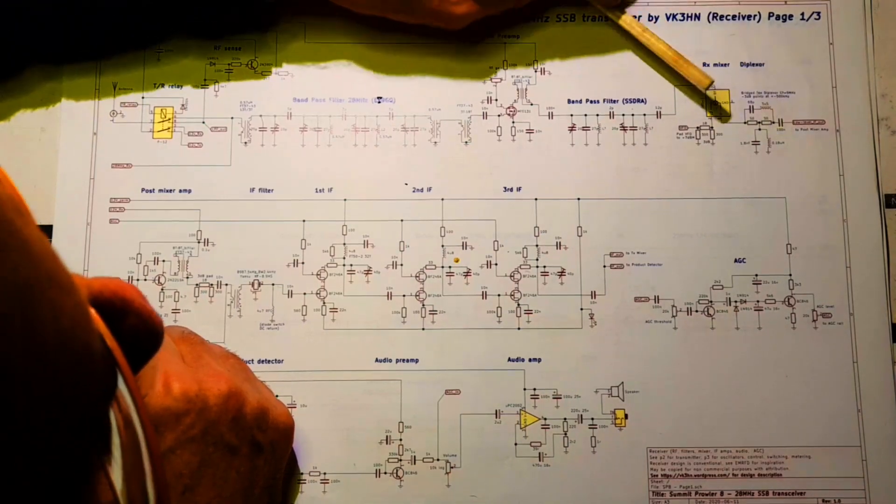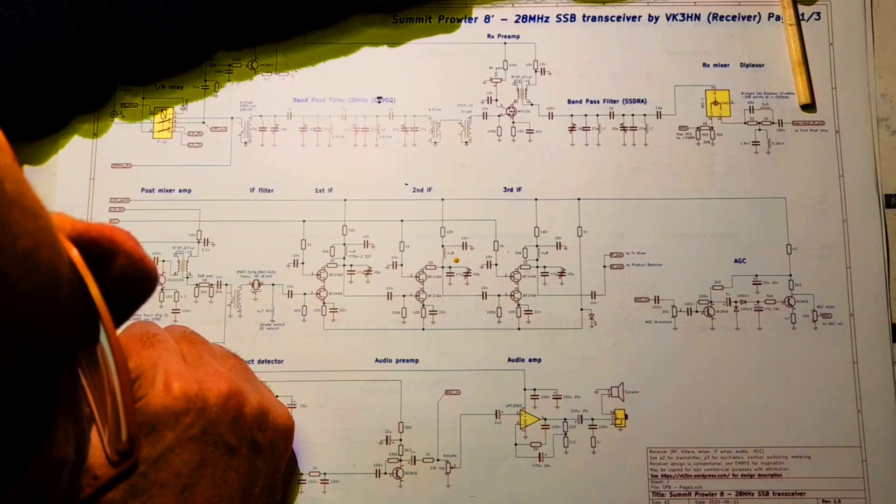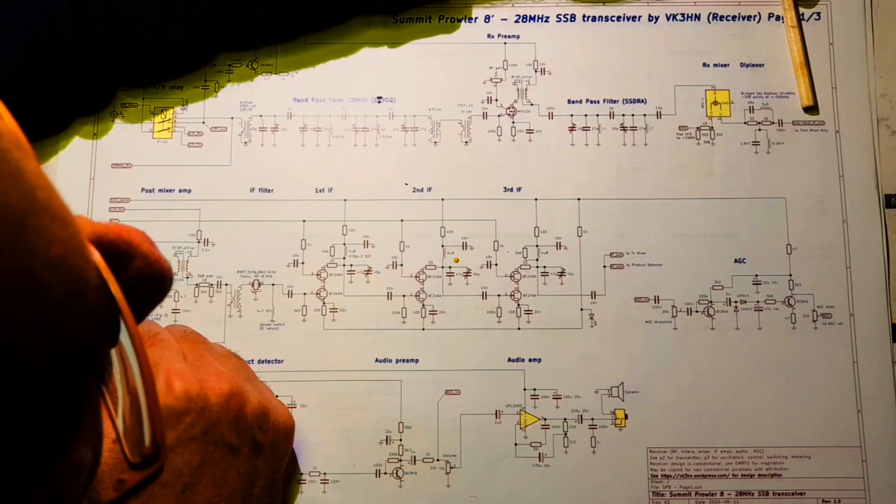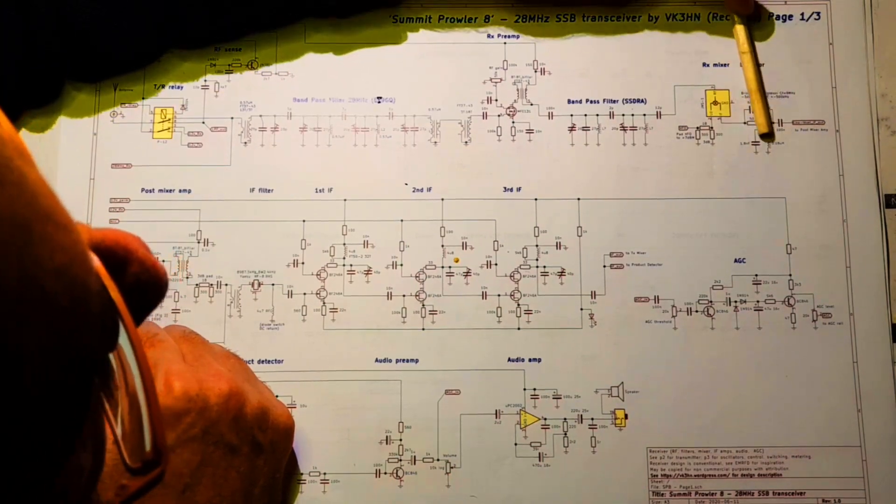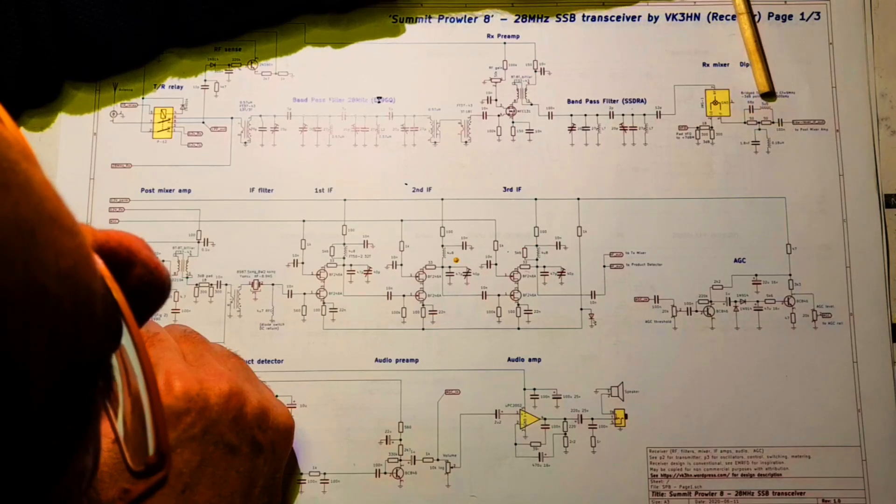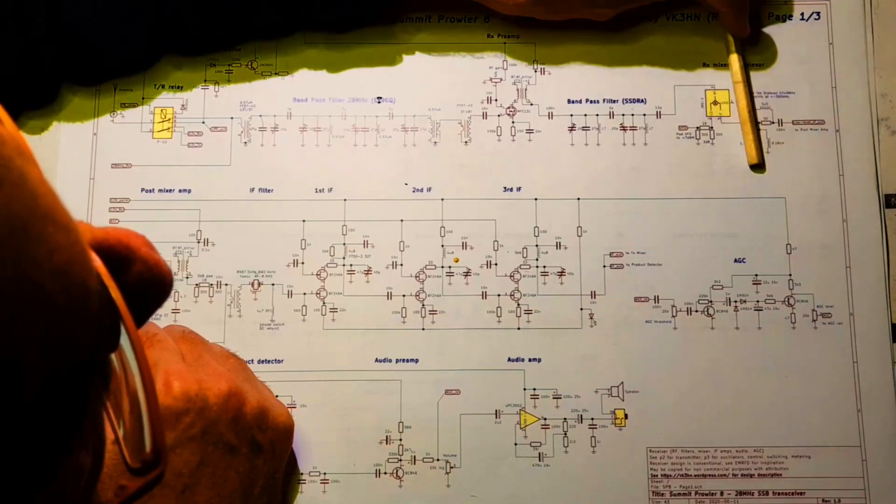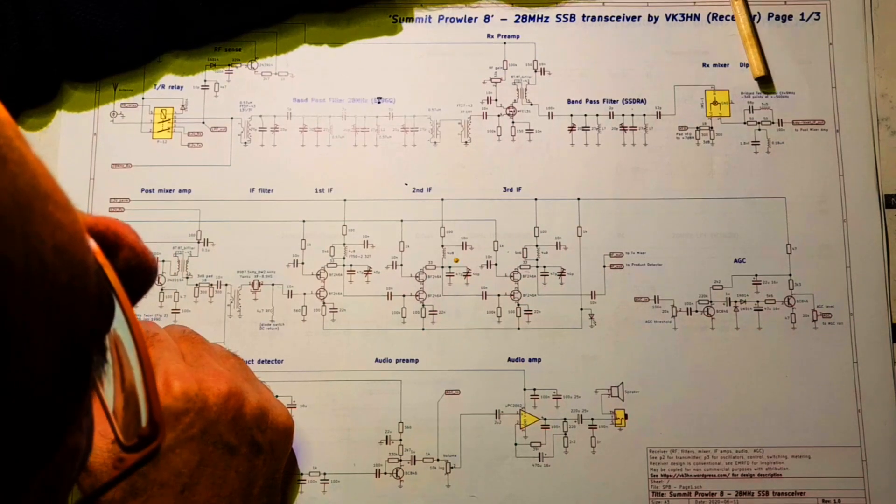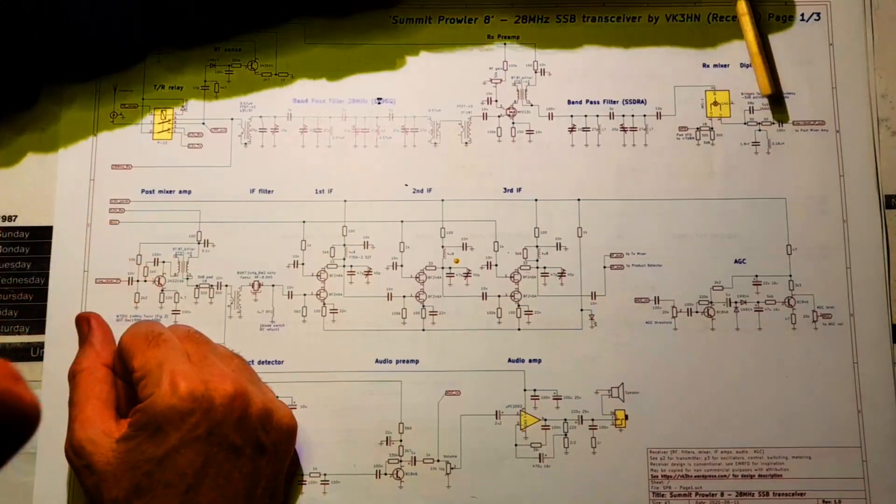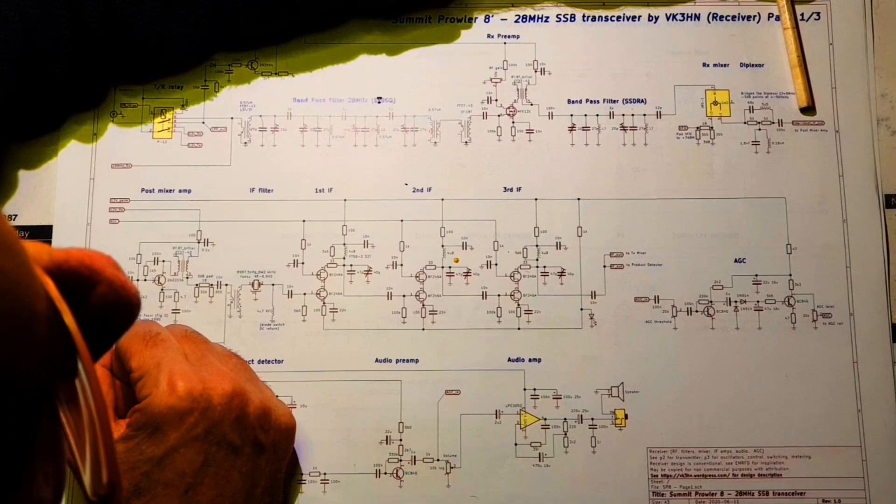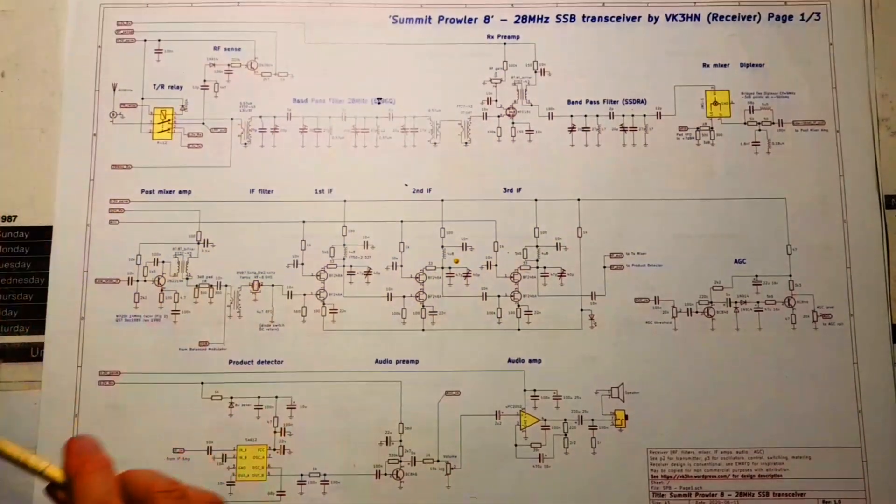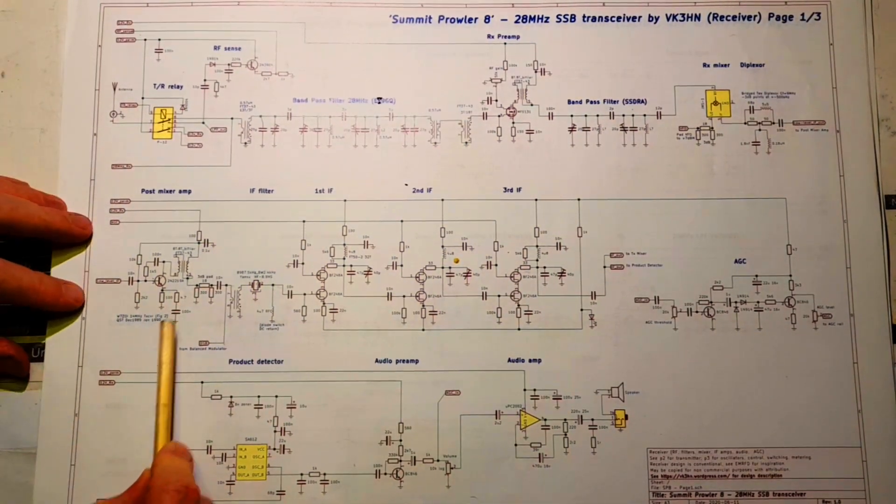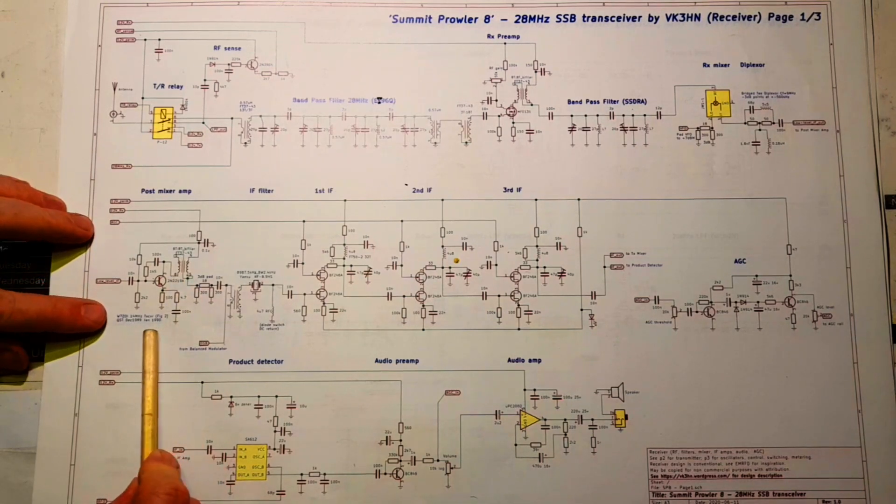The VFO is coming in here at 28 plus 9, 37 MHz and generating about an 8.9 MHz IF. And these components here form a diplexer to clean up the unwanted frequencies at the output of the receive mixer. So here we've got 8.9 MHz signal now.